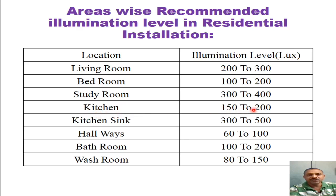The kitchen should have an average illumination in the range of 150 to 200 lux. The kitchen sink, where utensils are to be washed, should have an illumination level of 300 to 500 lux. The hallways in a residential building should have an illumination level of 60 to 100 lux. The bathroom should have 100 to 200 lux, and the washroom should have an average illumination level of 80 to 150 lux.